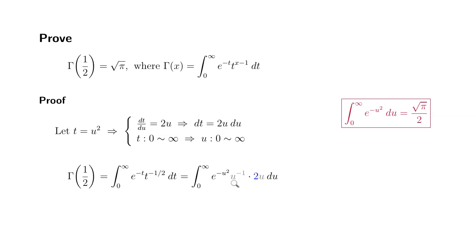So you can see that the u to the negative 1 and u cancel out, so they're going to be gone. And this 2 is a constant, I'm going to place it outside the integral, which gives us this: 2 times integral from 0 to infinity, e to the negative u squared with respect to u, which is exactly the integral here.